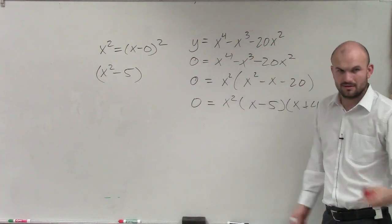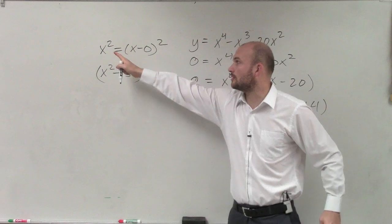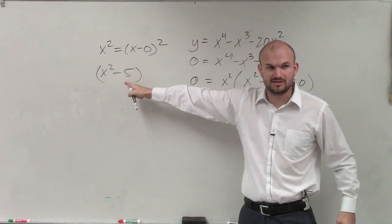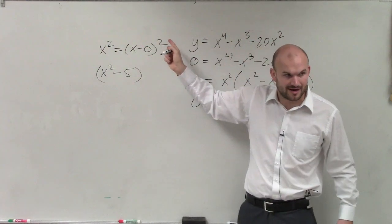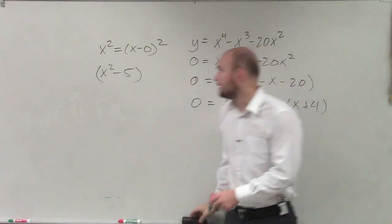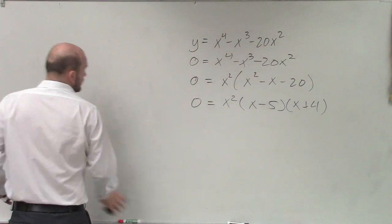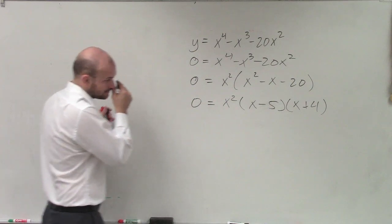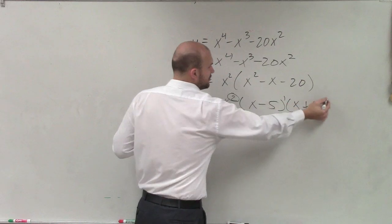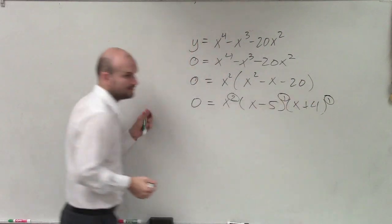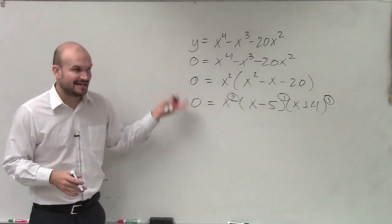The x² is outside the factor. Notice the difference - this has multiplicity 2, while these have multiplicity 1. That 2 is outside the factor. So this zero has multiplicity 2, while the others have multiplicity 1.